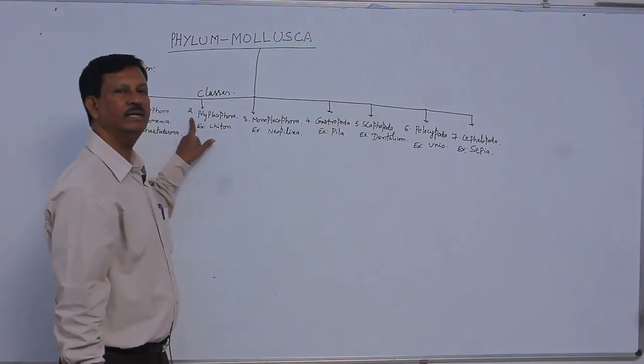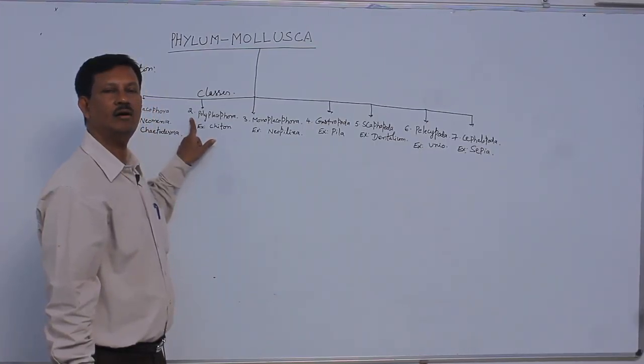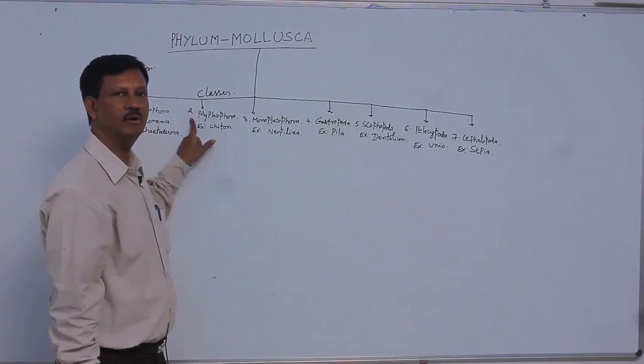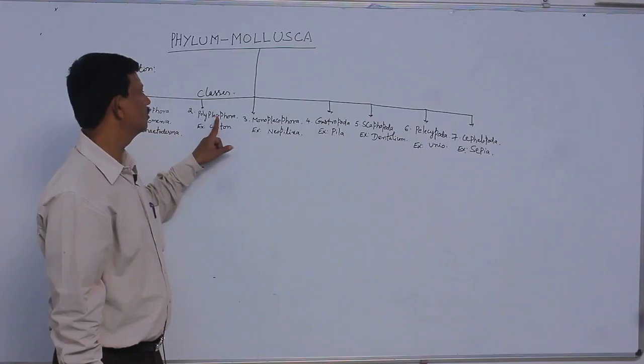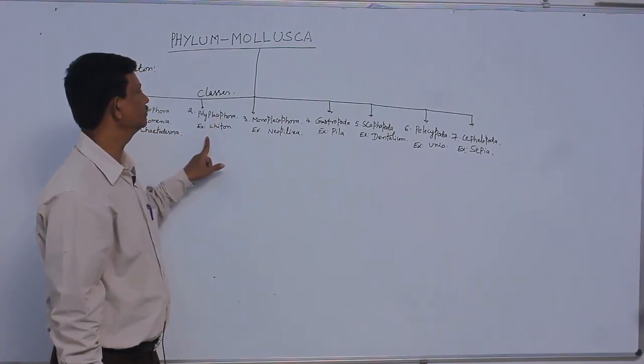Second class, Poly-Practophora. Poly means Many. There are a large number of shells or plates present in the body. Hence, they are known as Poly-Practophora. Example is Chiton.